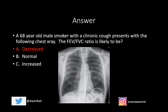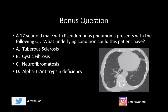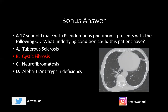As a bonus question: a 17-year-old male with pseudomonas pneumonia presents with a CT showing bronchiectasis or bronchial enlargement within the right lower lobe bronchi. What underlying condition could this patient have? Remember, patients with bronchiectasis have a high predisposition to pseudomonas. You should know that cystic fibrosis is associated with bronchiectasis, as are immotile cilia syndrome and Kartagener syndrome. Remember, alpha-1 antitrypsin is associated with emphysema, not bronchiectasis.